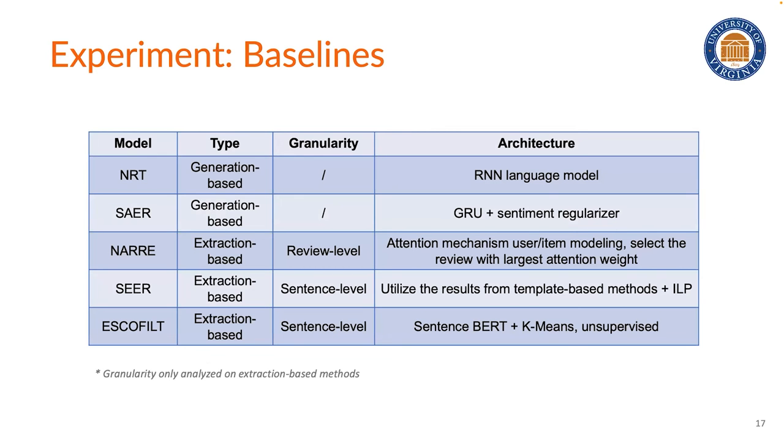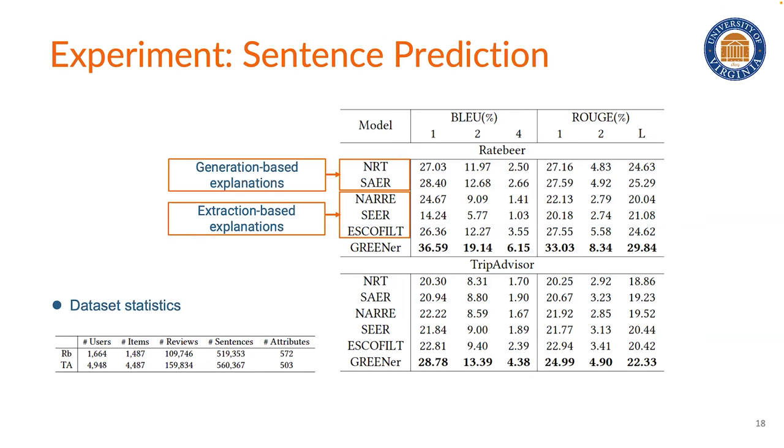We compare this method with five baselines. The first two are generative-based methods, and the next three ones are extraction-based methods. We use BLEU and ROUGE to evaluate the quality of the generated explanation. We use two popular real-world review datasets, which are Yelp and TripAdvisor.